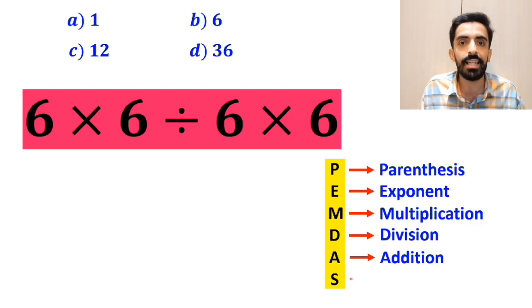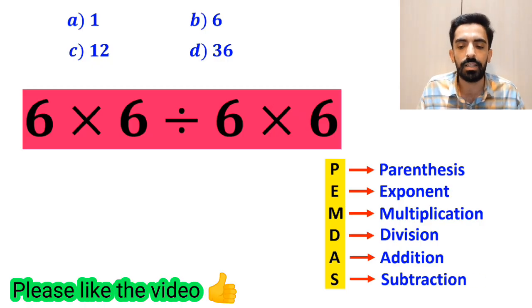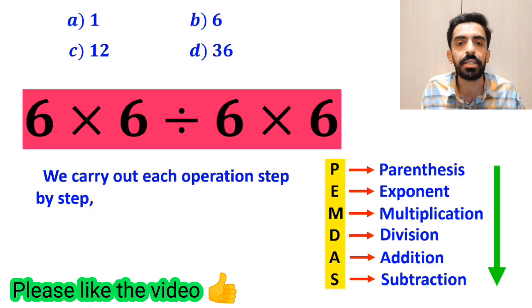In this rule, P stands for parenthesis, E stands for exponent, M stands for multiplication, D stands for division, A stands for addition, and S stands for subtraction. We must carry out each operation step by step, following the correct order from top to bottom.